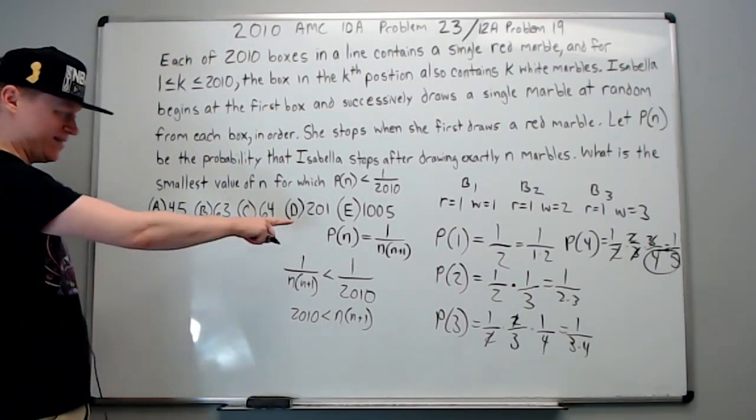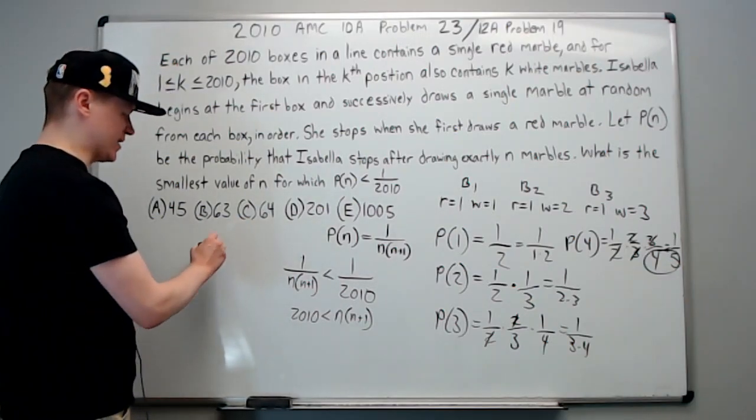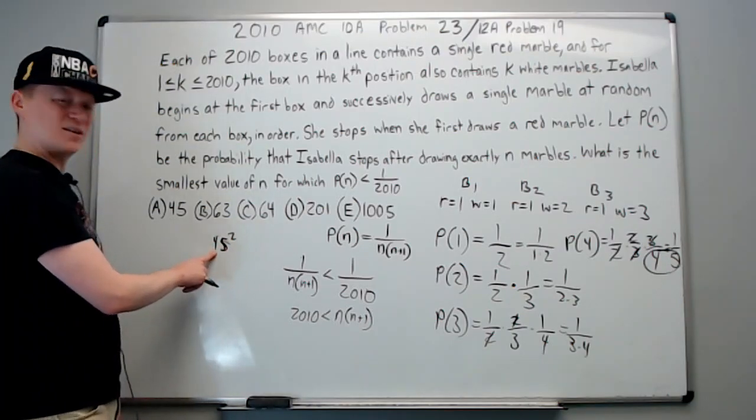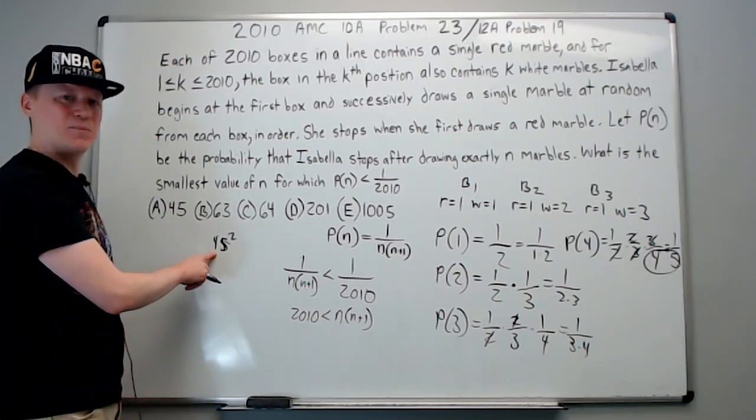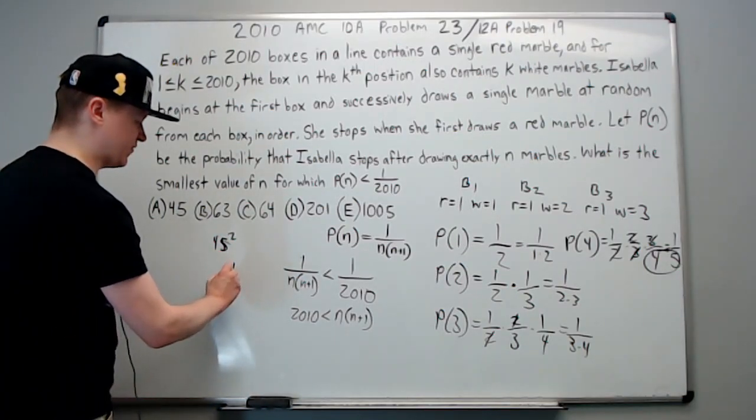So let's just think about what 45 squared is. There is a trick for numbers that end in five. You take the part left of the five and you add the number after it in the number line and you multiply. It's hard to explain, let's just say 15 squared.